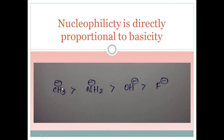Next, nucleophilicity is directly proportional to basicity, and basicity is inversely proportional to electronegativity. Carbon is least electronegative, then nitrogen, then oxygen, then fluorine — the most electronegative element. So CH₃⁻ can give electrons most easily, followed by NH₂⁻, then OH⁻, while F⁻ always tries not to give electrons because it is the most electronegative — it always tries to take electrons rather than give them.